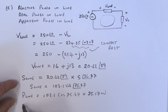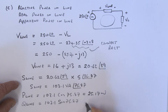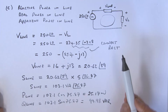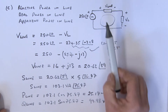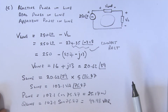The reactive power in the line is equal to 103.1 times sine of 75.87 degrees, which gives 99.98 volt-amps reactive. Another way you could have done this, of course, is using the I-squared approach, knowing the current and the impedances.